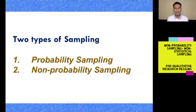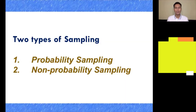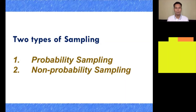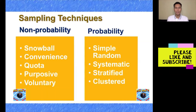Non-probability sampling involves non-random selection based on convenience or other criteria set by the researcher, allowing the researcher to easily collect initial data. It is also called non-statistical sampling. These are the sampling techniques, particularly the types of non-probability and probability sampling techniques.